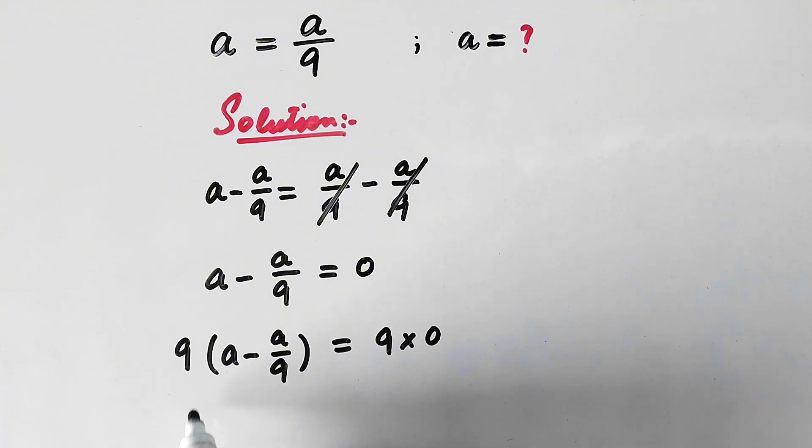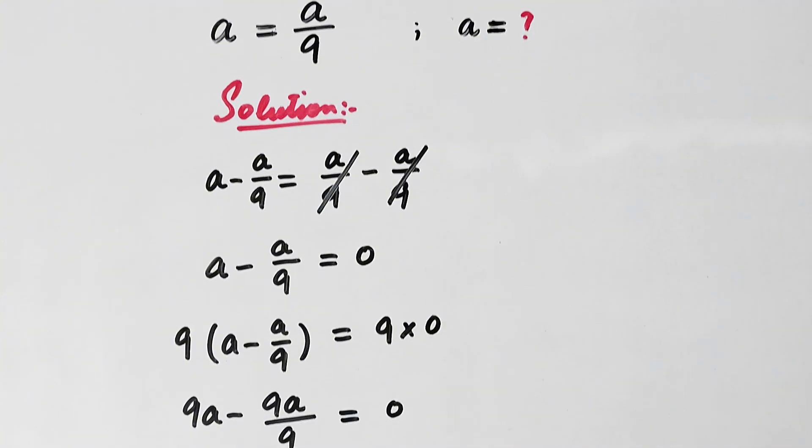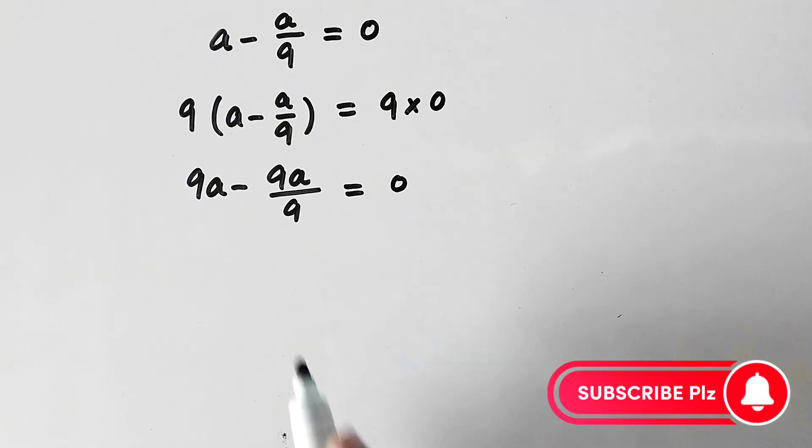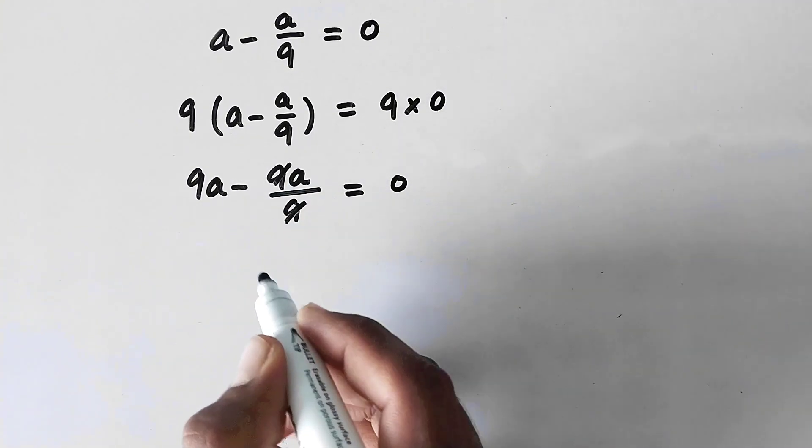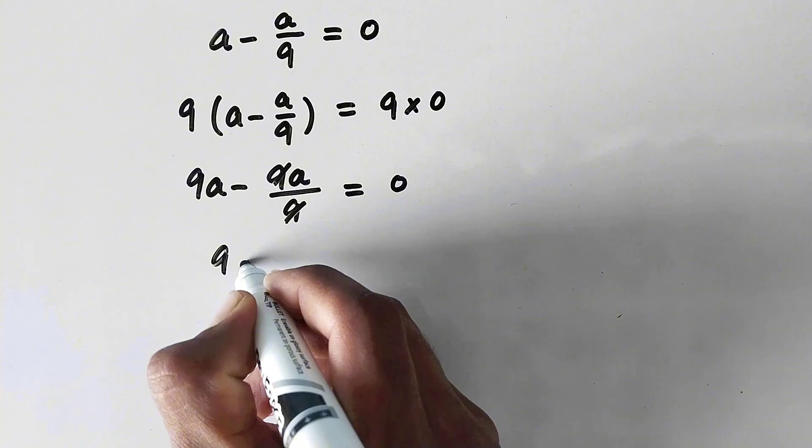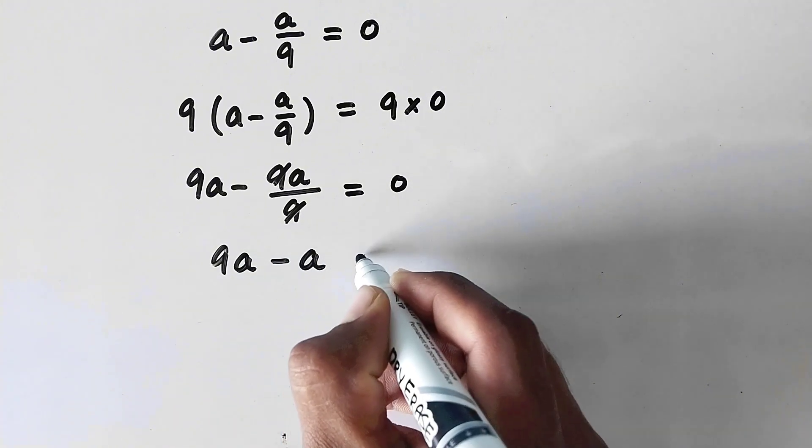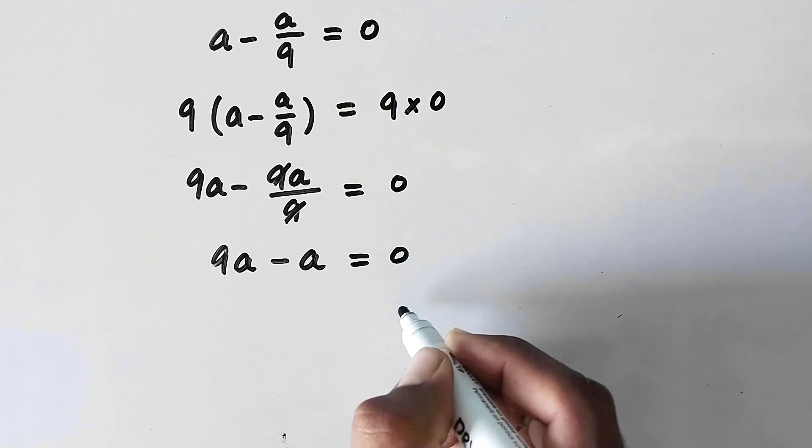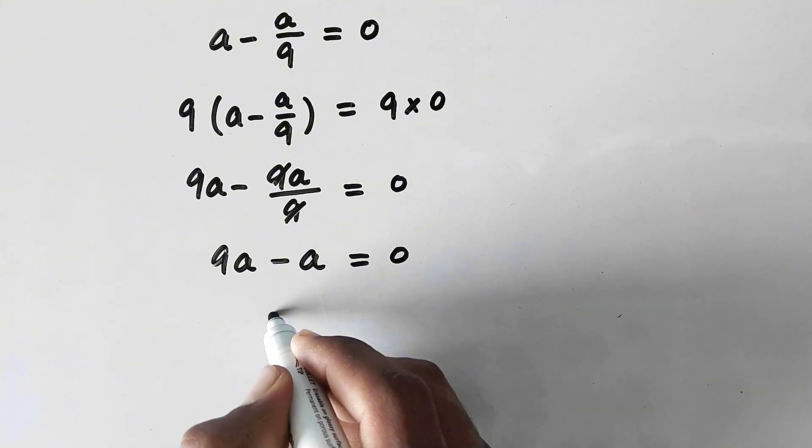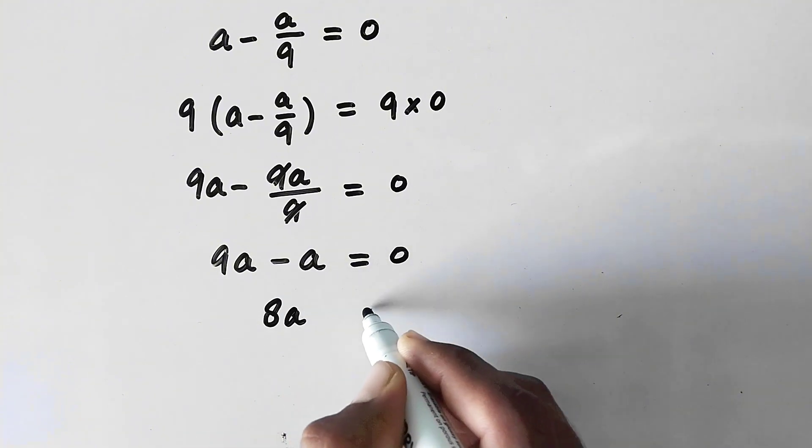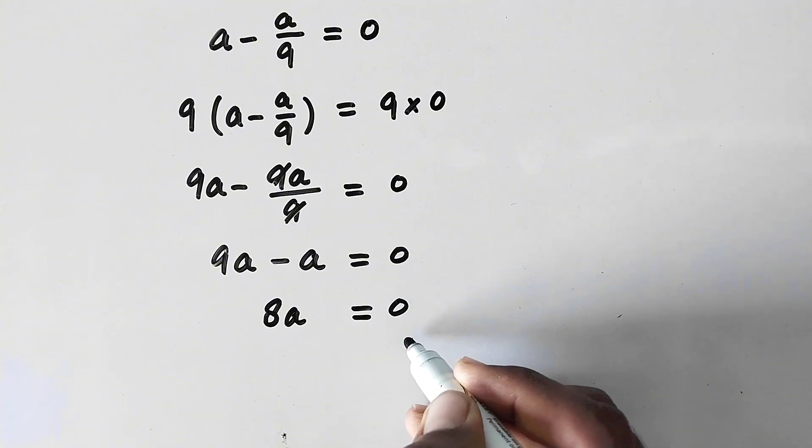So here by multiplying this value to these values it will be 9a minus 9a over 9 equal to 0. And now here this 9 will be cancelled by this 9 and we will get 9a minus a is equal to 0.